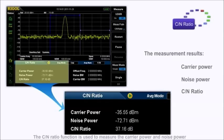The carrier-to-noise ratio function is used to measure the carrier power and noise power within the specified bandwidths, as well as the ratio.